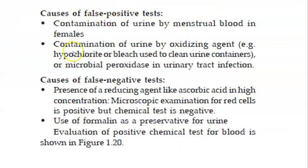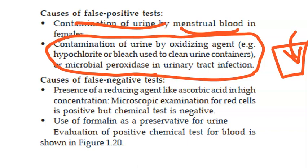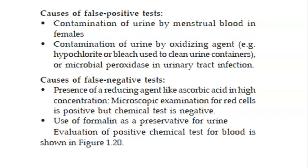Sometimes though blood is detected, it may not be true hematuria - the blood can be coming from other places. For example, menstrual blood contamination, or if the urine sample is contaminated by hypochlorite or bleach - that is, someone has tampered with the urine sample by adding an oxidizing agent. This is a false positive. For false negatives - you will miss hematuria when ascorbic acid is high; the chemical test is negative even though RBCs are visible under microscope.